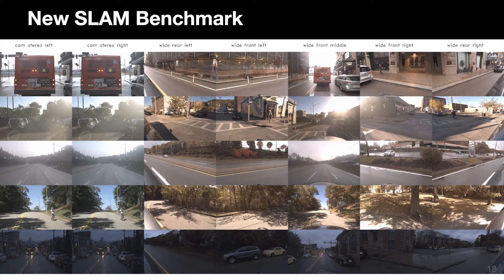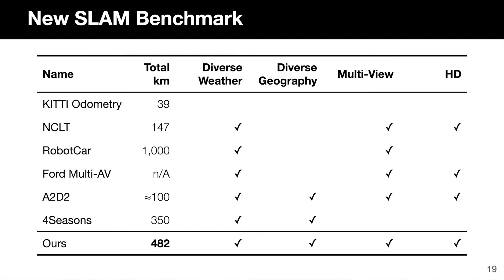We use a robot platform with seven asynchronous cameras and collect 21 hours of driving covering 482 kilometers in the Pittsburgh area. Our dataset includes challenging real-world conditions such as occlusion, lighting changes, textureless highway driving, shadows and vegetation, as well as low light scenes. Compared to existing public benchmarks, our dataset is large scale, covers diverse weather conditions and geographic regions, and is recorded with multiple asynchronous cameras.